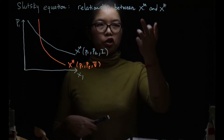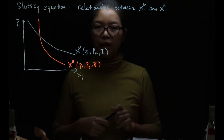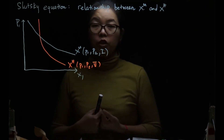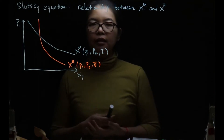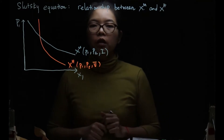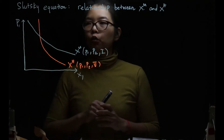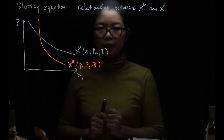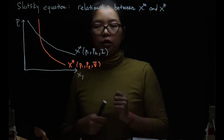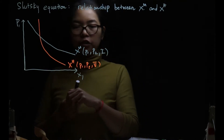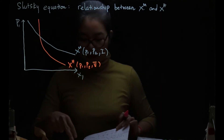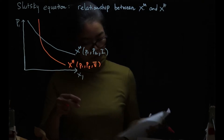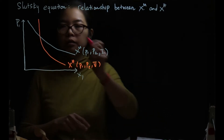We have talked about the Marshallian demand function and the Hicksian demand function. We also know that they are somehow related via the income and substitution effect. But how exactly is the relationship between these two? We have an equation called the Slutsky equation, which shows this relationship. This material is from slides 45 to 47.